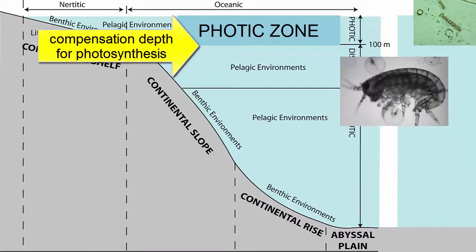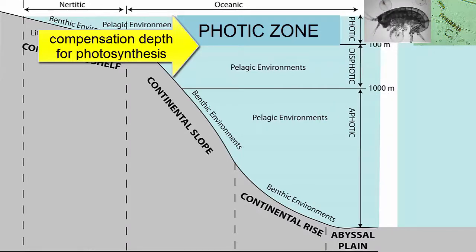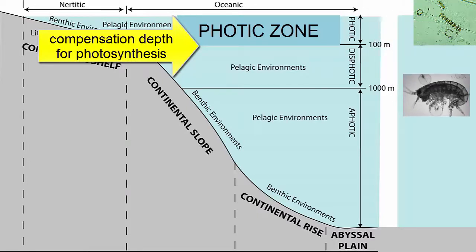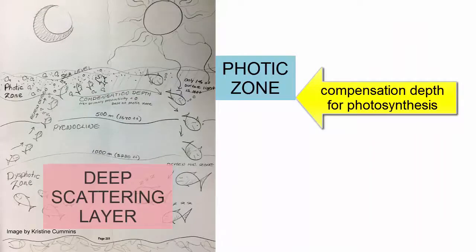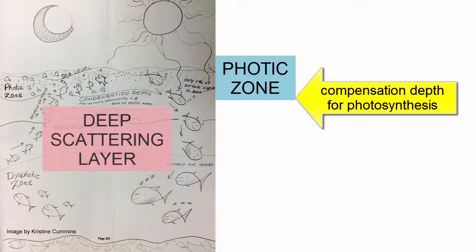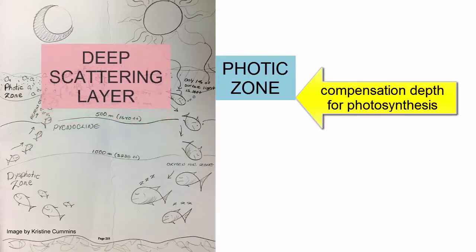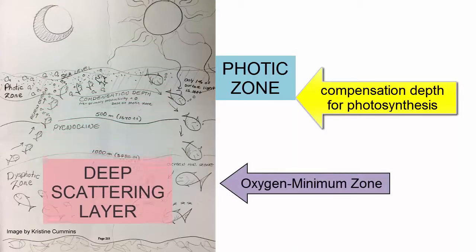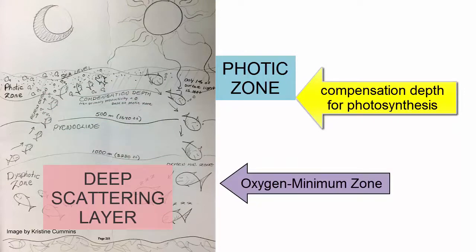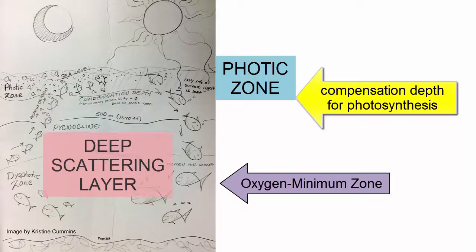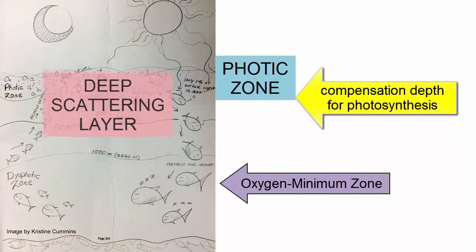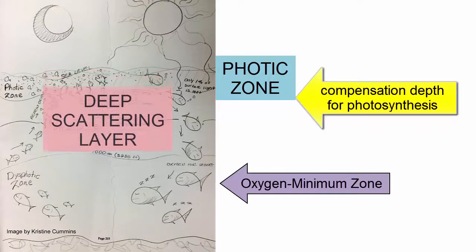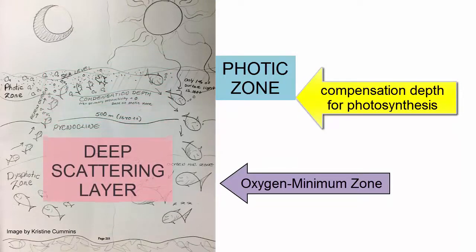Large numbers of heterotrophs rise above the compensation depth at night to feed on photosynthesizers and on each other, protected by darkness. During the day they descend back below the photic zone, just under the pycnocline, hiding and waiting for the next night's feast. We call this large daily migration the deep scattering layer, because the large mass of organisms can be detected by sonar. As a consequence, the lowest oxygen levels in the world's oceans occur at the depth where these organisms hide during the day — they consume oxygen through respiration with no photosynthesis to replenish it, and mixing below the pycnocline is slow.